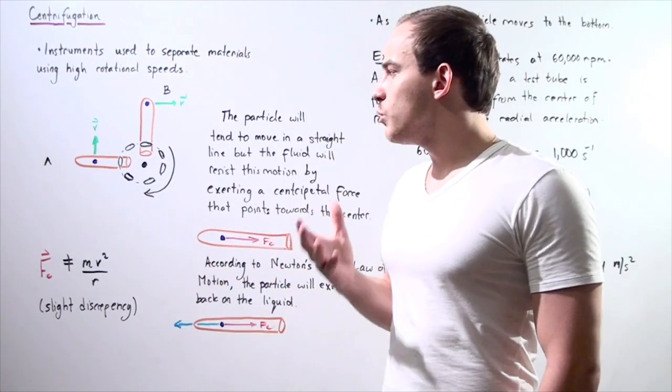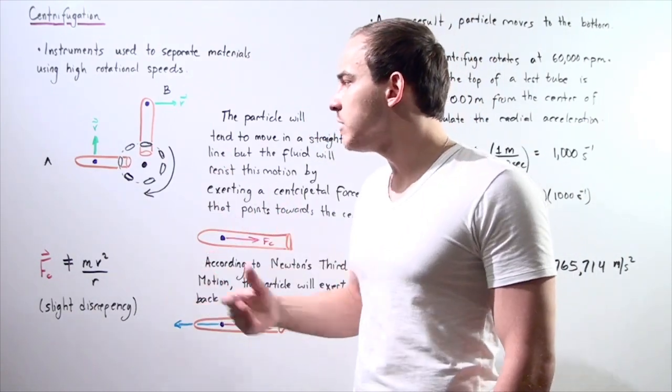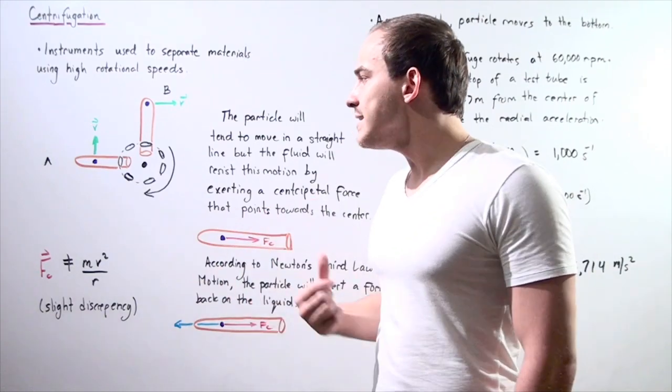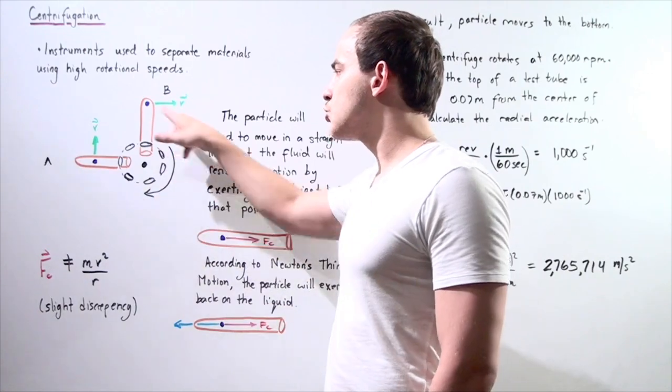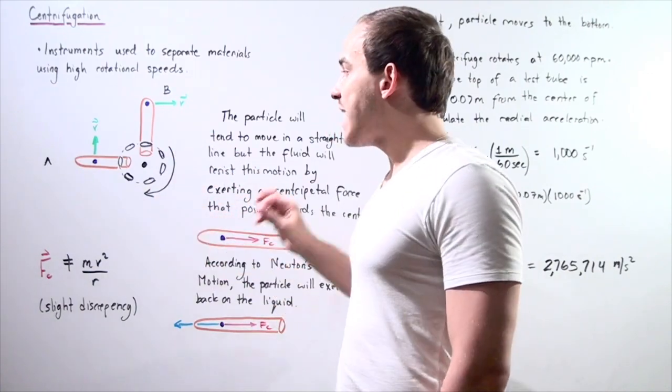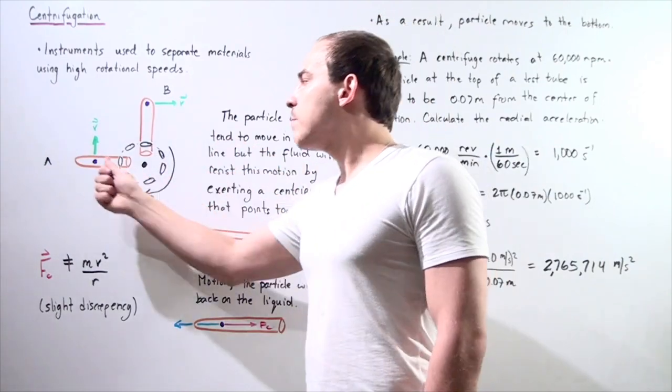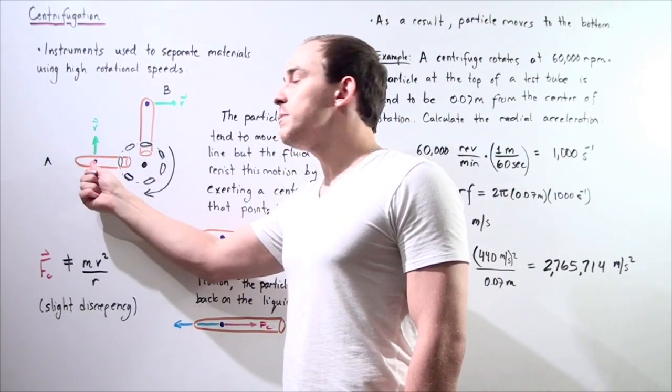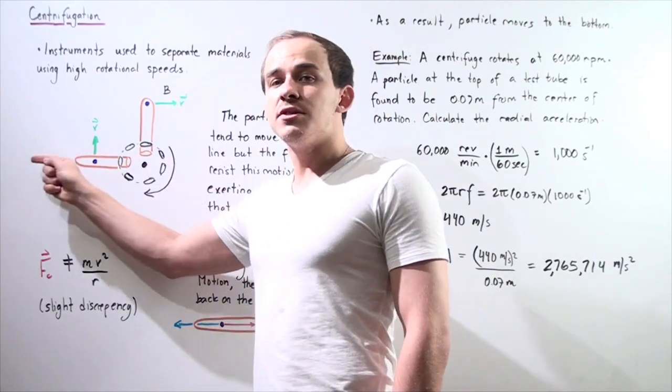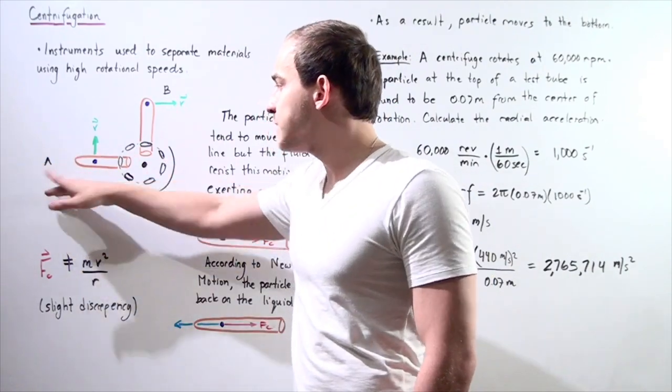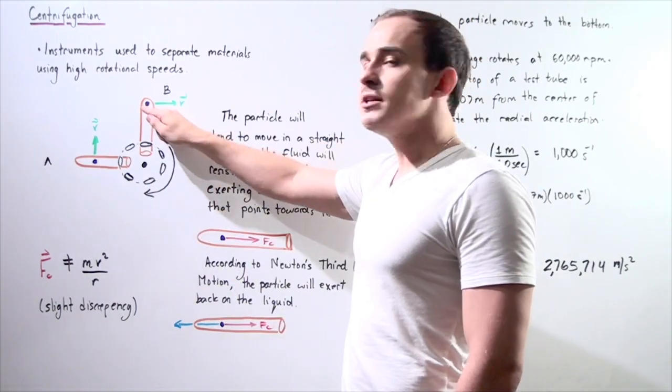Let's suppose we take a test tube. Inside the test tube we have a certain particle that we want to separate, so we place it inside our rotor and we allow our centrifuge to rotate. As our test tube rotates, the particle inside the test tube begins to move and it travels further down the test tube. At point A it's found here and at point B it's found further down the test tube.